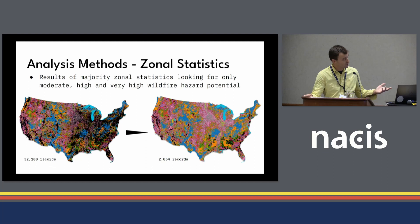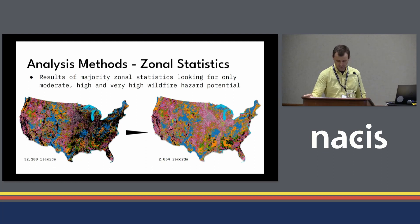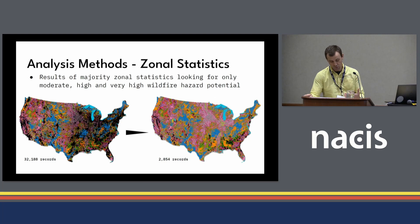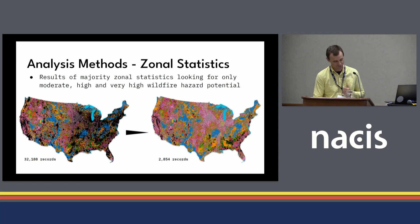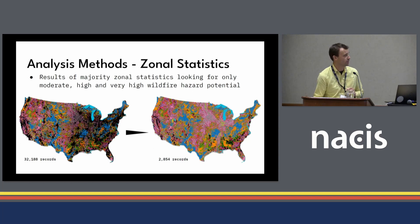The results of the zonal statistics show a majority class has been assigned. The denser map with 32,188 records included majority classes for all five wildfire hazard potential classes. I ultimately filtered these down to just the moderate, high, and very high classes, which got me down to about 2,854 records. It took a very long time to apply those zonal statistics to those 32,000 records.